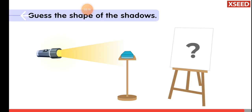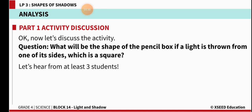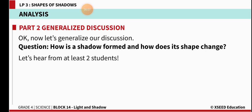You can understand how the shadow is formed when light falls from the left side, the right side, and also from the top. What will be the shape of the shadow of a pencil box if light is thrown from one of its square sides? The shadow of the pencil box will be a square. If light is thrown from the direction of the other side, it will be rectangular. The shape of the shadow depends on the direction from where the light is thrown, and the size depends on where the light source is coming from.